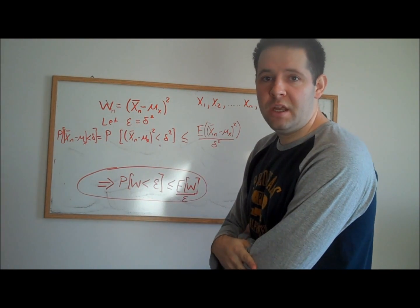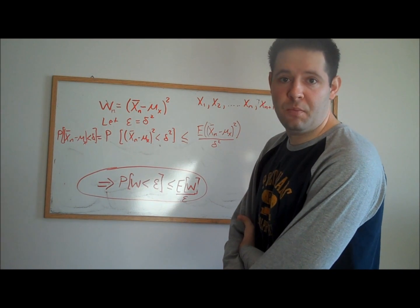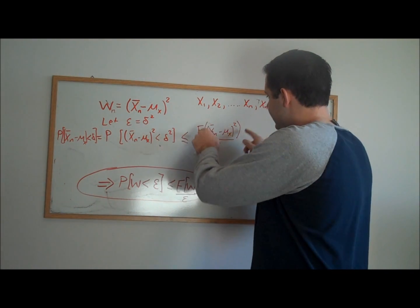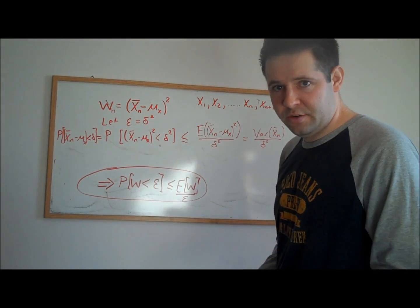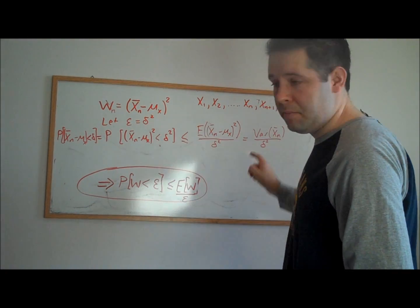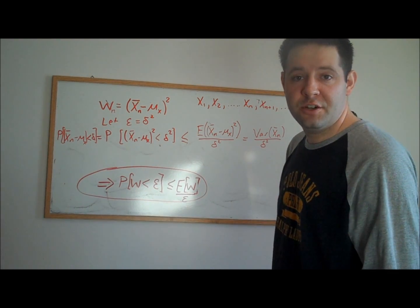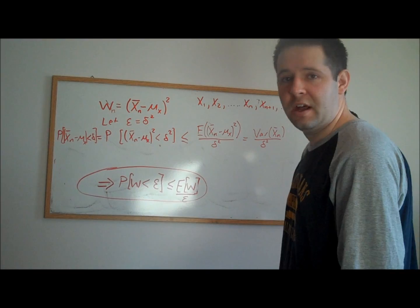From previous results, we know that the mean of x is also the mean of x bar, and so we know that this is actually the variance of x bar. We also know something very particular about the variance of x bar. That's the variance of the population, sigma squared, divided by n.